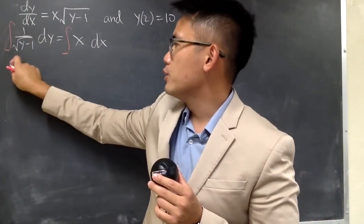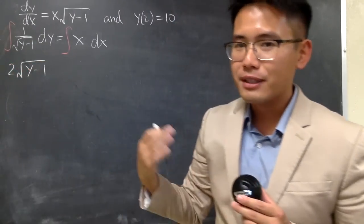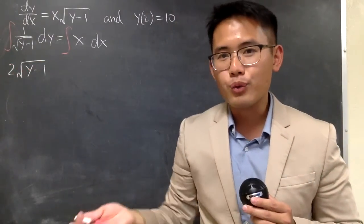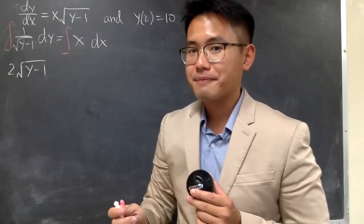And right here you pretty much will get 2 square root of y minus 1 after some u-sub and also some power rules, but backwards. And if you differentiate this you actually get that back.